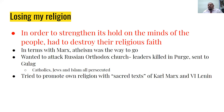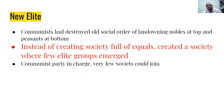He saw how much they loved Lenin, so he put what Lenin and Karl Marx were writing about and tried to make their own religion to win his people over. Communists had destroyed the old social order of landowning nobles at the top and peasants at the bottom with a small middle class. Instead of creating a society of equals, a few elite groups emerged. Obviously the Communist Party was still in charge, and very few Soviets could join.